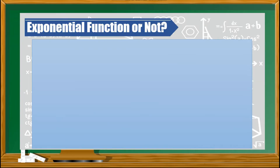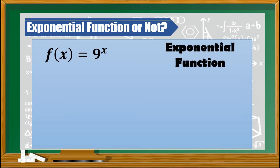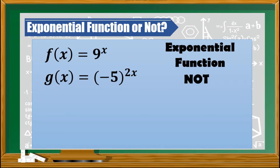Based on the definition, let us now identify if the given is an exponential function or not. First, f of x is equal to 9 raised to the power of x — this is an exponential function. g of x is equal to negative 5 raised to the power of 2x — this is not an exponential function, because the base is negative.